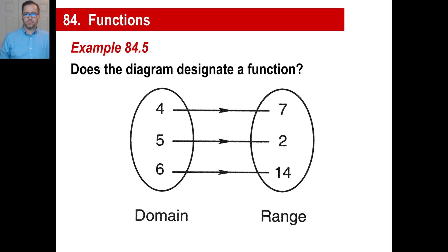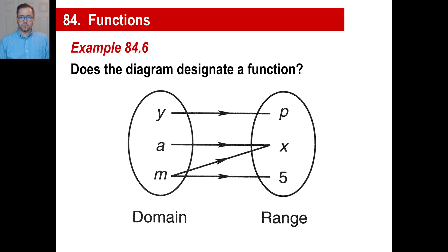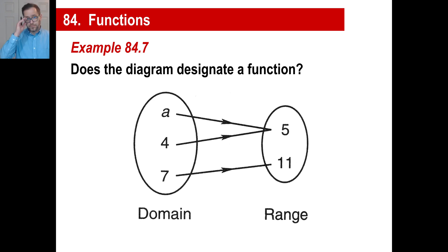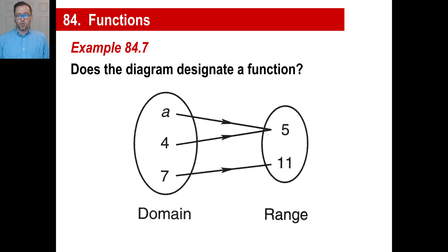Does this mapping designate a function? If everything on the left (the domain, X) has exactly one result for Y, then yes — that is a function. The next mapping: Y gives one answer, A gives one answer, but M gives two answers — not a function. The third mapping: A gives one answer, 4 gives one answer, 7 gives one answer — that is a function, even though two inputs both point to 5.